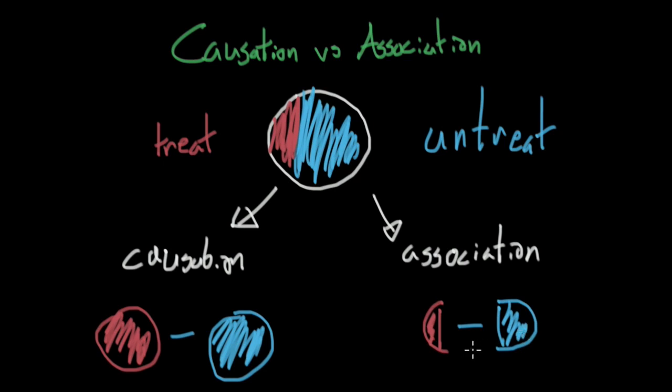So you might see the difference now. Causation in effect compares apples to apples. It compares one full population to that same full population. Association doesn't necessarily do that. Instead, these subpopulations, the population of the treated, might be very different from the population of the untreated.